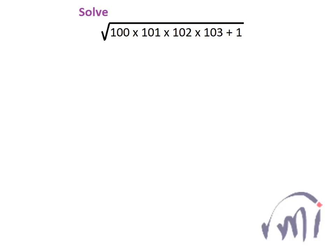In this problem we are going to find the square root of 100 multiplied by 101 multiplied by 102 multiplied by 103 plus 1. If we apply BODMAS first we have to multiply all these four numbers, then add 1, and then find the square root of that very big number.